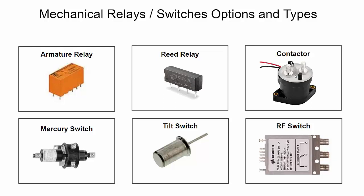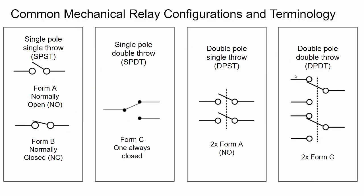Through the rest of this video we're going to focus more on armature relays and reed relays. It's important to know common mechanical relay configurations and terminology - this is useful when you're researching a part for your design, because datasheets use these terms. The simplest type is the single pole single throw switch, abbreviated SPST. There are two types of SPST: Form A is normally open, meaning the switch in its default state is open and you apply an electrical signal to close it. Form B is the opposite - normally closed - and you apply the electrical signal to open it. You'll often see these as Form A or NO (normally open), or Form B or NC (normally closed).